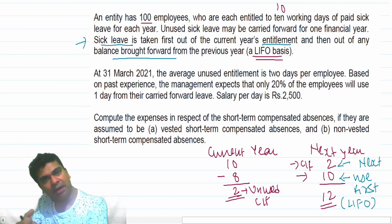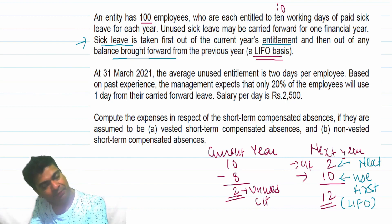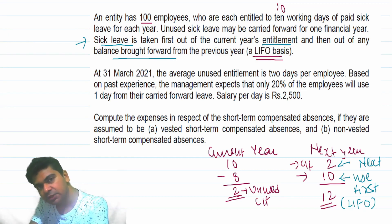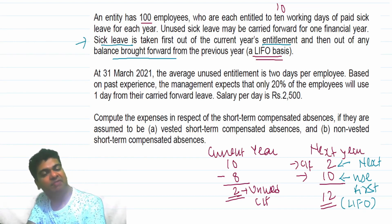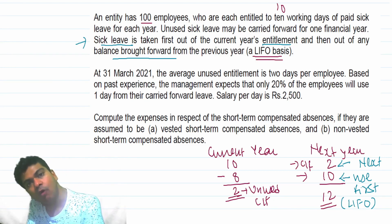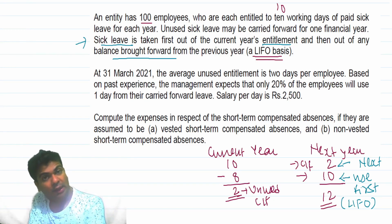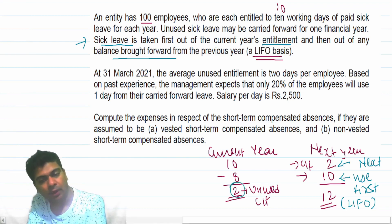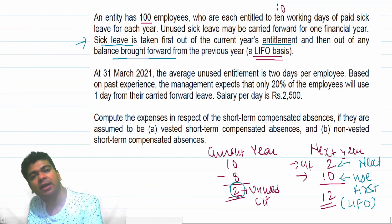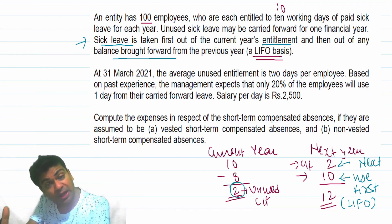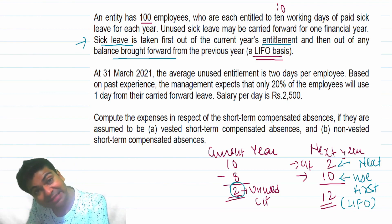So the first item will be the carry forward and the next item will be the entitlement of that year, but the leave entitlement of the next year should be utilized first and the carried forward of the previous year should be utilized next — that's the reason they are calling it the LIFO basis. LIFO basis will make it even more difficult to utilize these 2 days. You will be of the view that you are getting 12 days of paid sick leave.